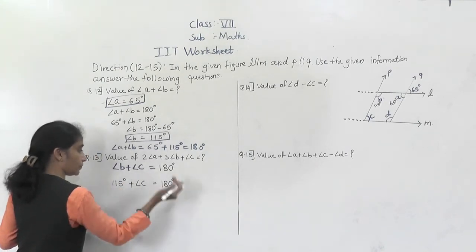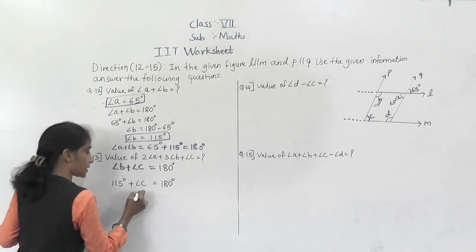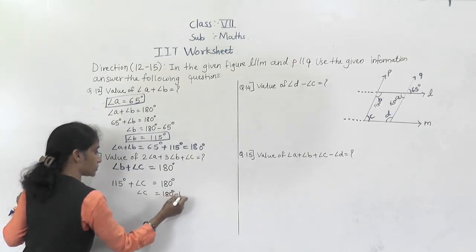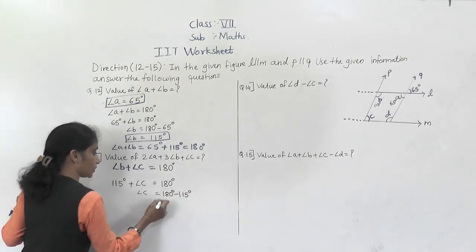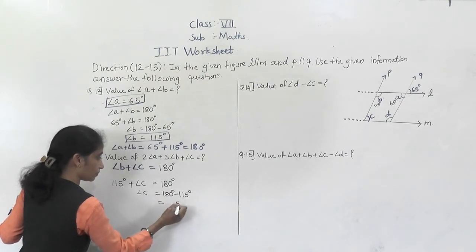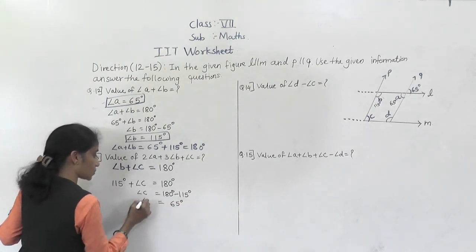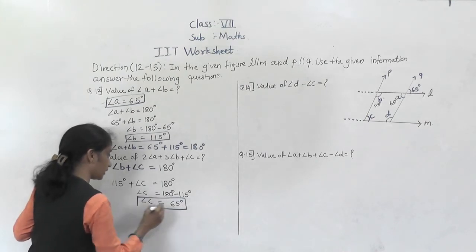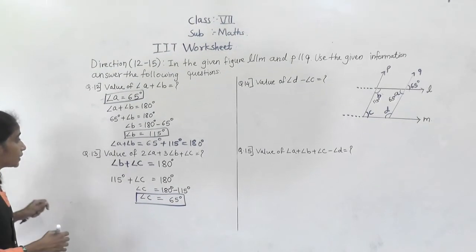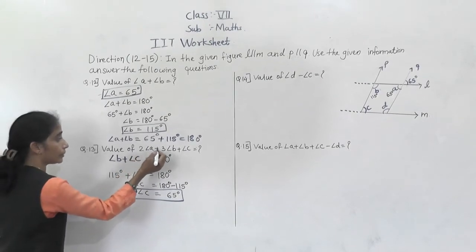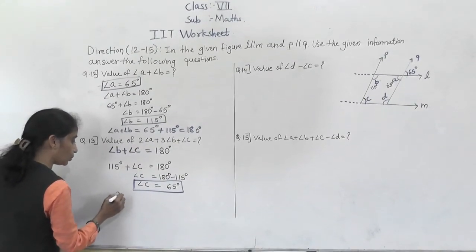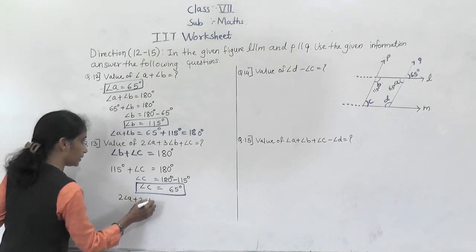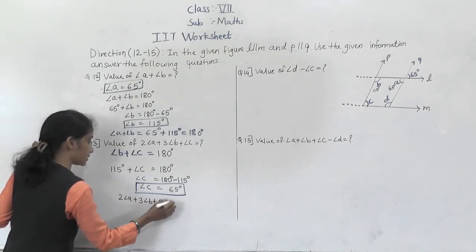So 115 degrees transfers to the right-hand side and becomes minus: 180 degrees minus 115 degrees. Angle C equals 65 degrees. Now we calculate 2 angle A plus 3 angle B plus angle C.